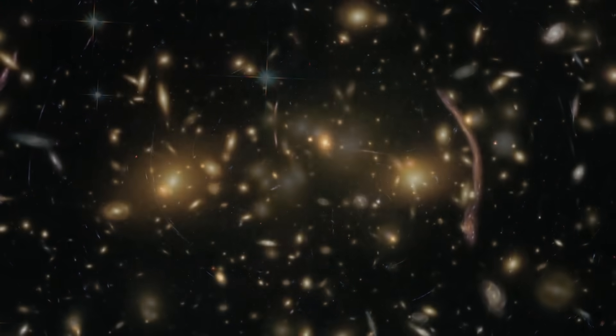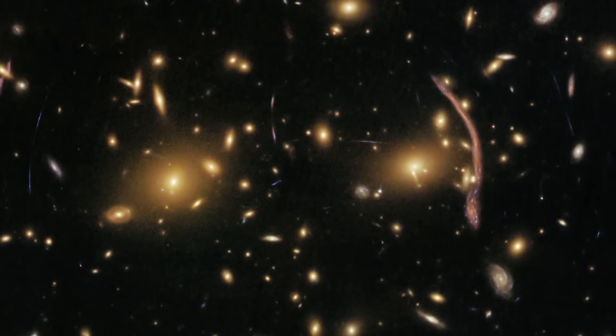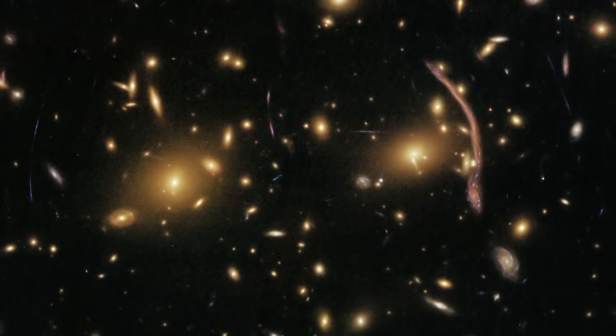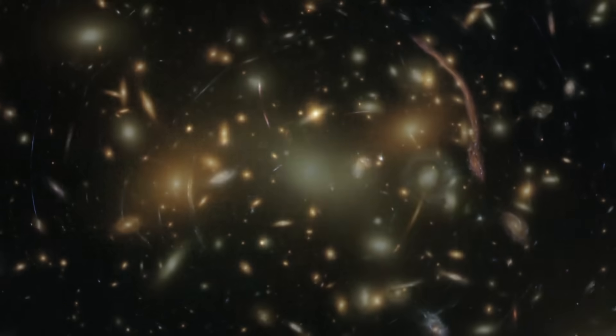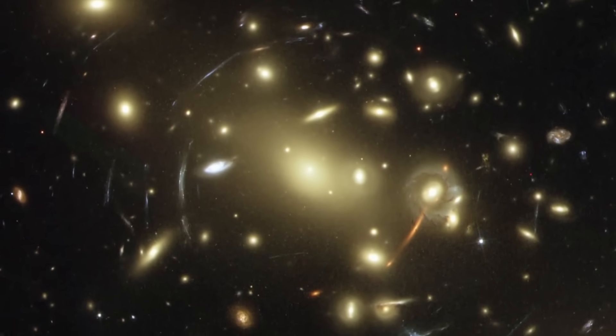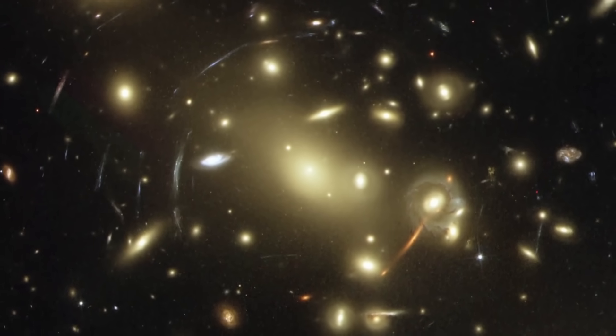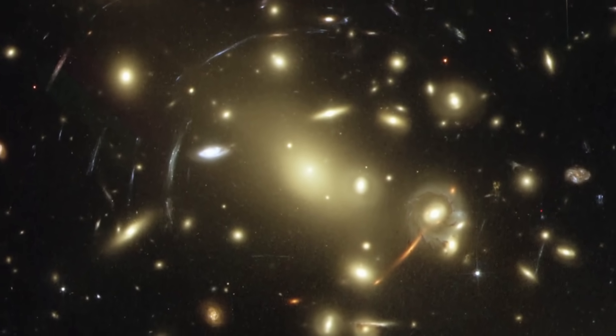Even more importantly, they provide strong evidence for dark matter. The amount of visible matter in lensing galaxies is not enough to explain the degree of bending we observe. This tells us that there must be invisible mass surrounding these galaxies.